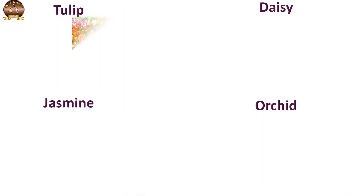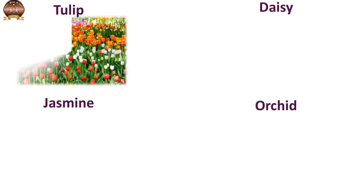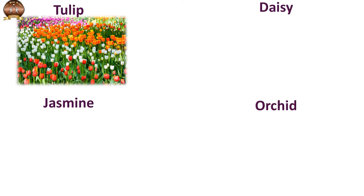Next comes the tulip. Tulip mostly grows in cold regions and comes in different colors.